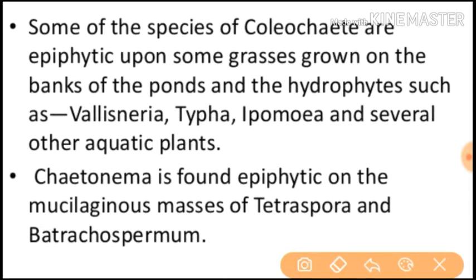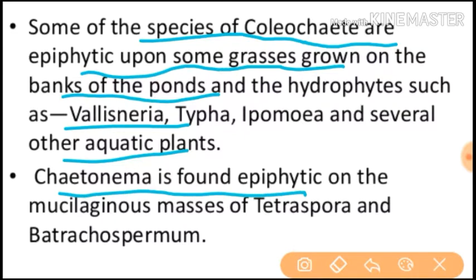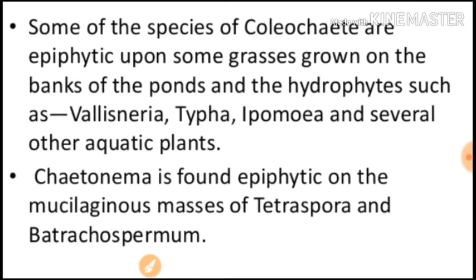Some species of Coleochaete are epiphytic upon grasses grown on the bank of ponds and hydrophytes such as Vallisneria and other aquatic plants. Chaetонема is found epiphytic on the mucilaginous mass of Tetraspora and Batrachospermum as well. You don't need to remember all examples — just the key ones.